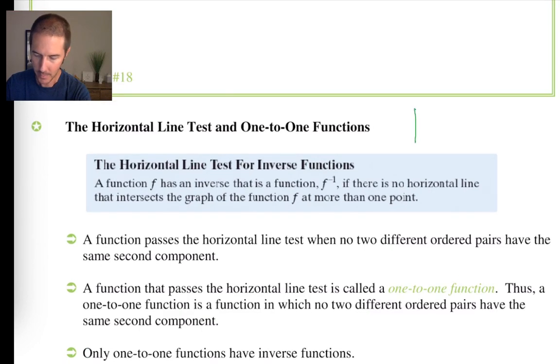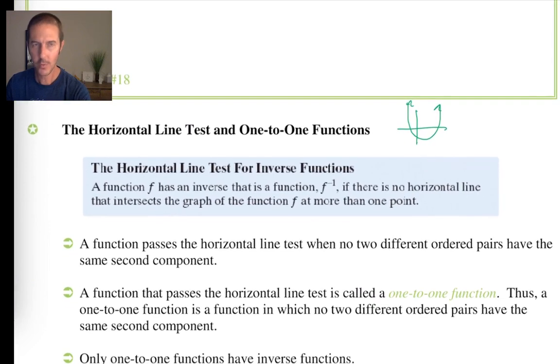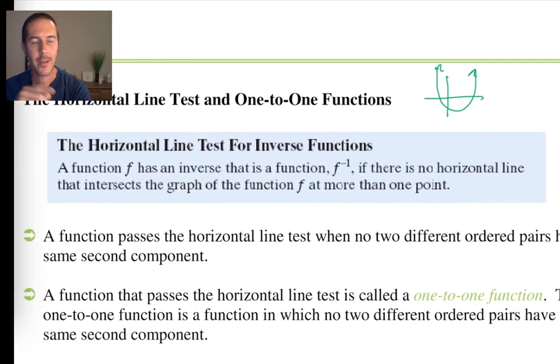The horizontal line test is then checking to see are we using any y values more than once. For example, if I had a parabola, well, this thing fails the horizontal line test big time. Look at this. If I draw a horizontal line right here, both of these points have the same y value. Fail, big time. So a parabola, while it's a function because it passes the vertical line test, it doesn't pass the horizontal line test. And what's the horizontal line test testing for? If your graph passes the horizontal line test, then the inverse of that graph will be a function. So a parabola is already a function. The question is, does this function have an inverse that's a function? And because this parabola fails the horizontal line test, the answer is no.